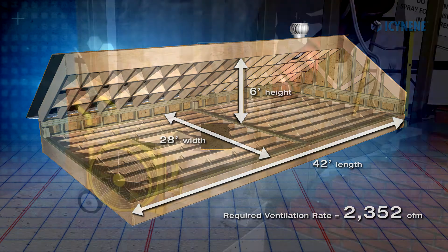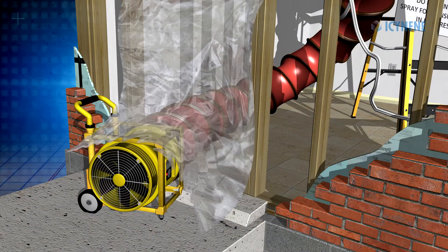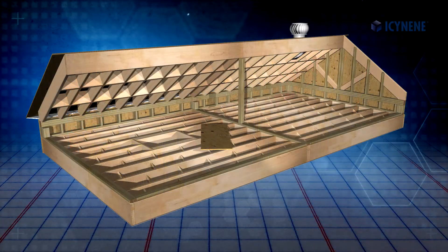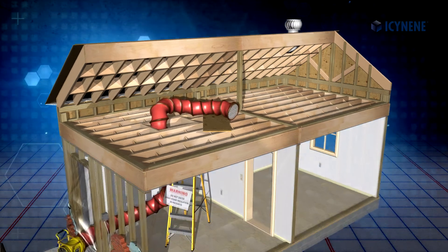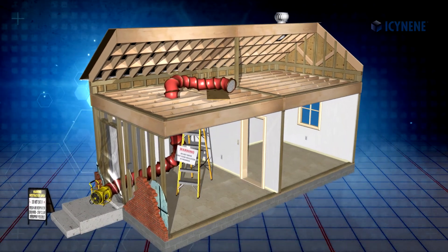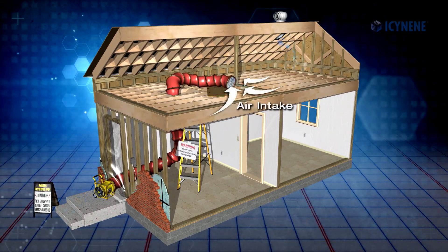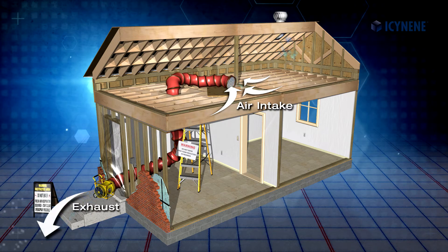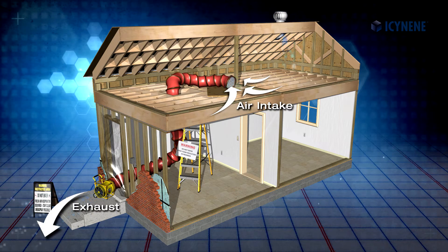Now that you have the required cubic feet per minute, you will need to obtain a suitable sized fan or fans capable of delivering the desired ventilation rate for the required re-entry and re-occupancy period. Make sure that the fan is positioned such that the air is drawn away from the spray area and ventilated to the outside in a safe location.